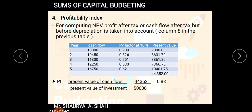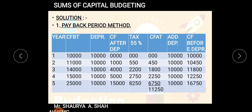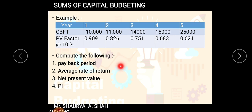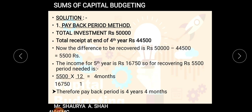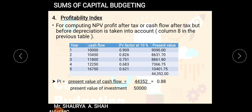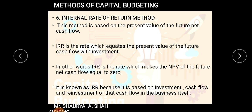Instead of deducting, for PI you divide: present value of cash flows divided by present value of investment. Present value of cash flows is 44,352 divided by the original investment of 50,000, giving PI = 0.88. We have now solved the same sum using four methods: payback period, average rate of return, NPV, and PI.